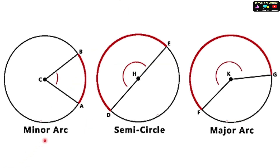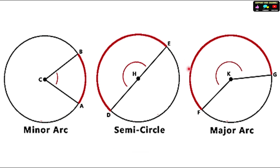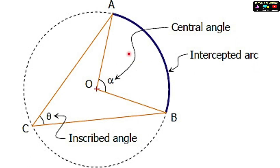Looking at the parts of the circle: the minor arc is the smaller arc marked in red. The semicircle is exactly half the circle. The major arc is greater than the semicircle. The central angle is angle AOB — it is central because it passes through the center. The inscribed angle ACB is on the circle itself. So: the central angle passes through the center, while the inscribed angle lies on the circle.